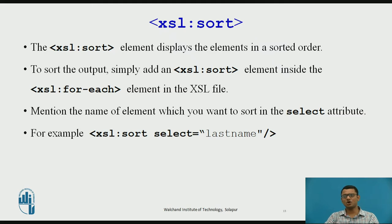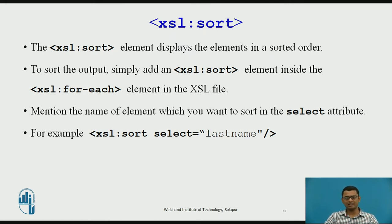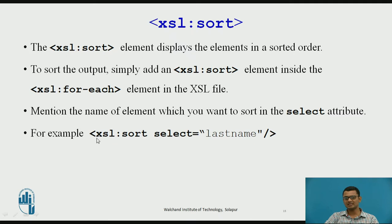The next element is the sort element. The sort element is used to sort the output of a particular element in the order that the user wishes. For example, if I want to sort the names of students according to their last name, I write the sort element after the for-each tag.